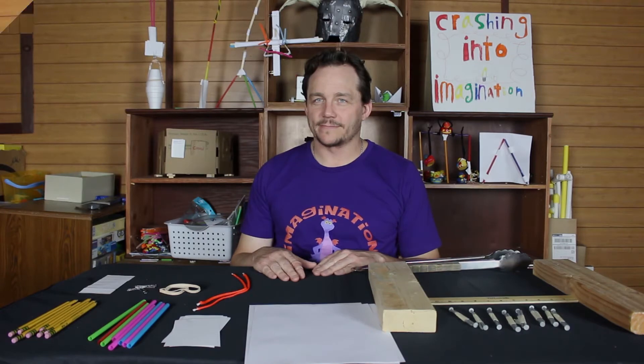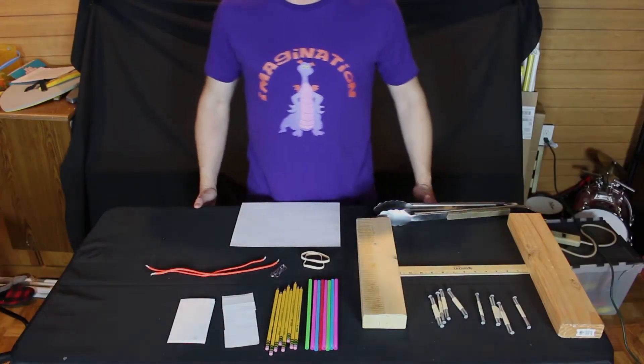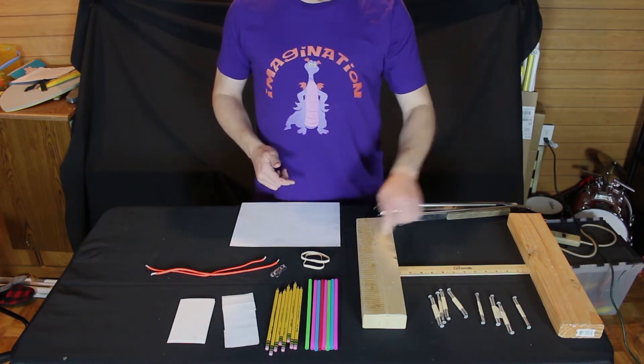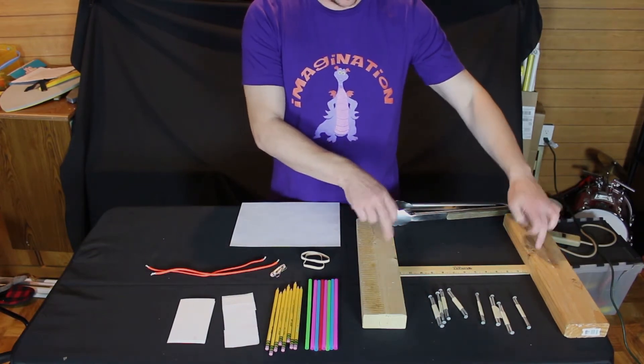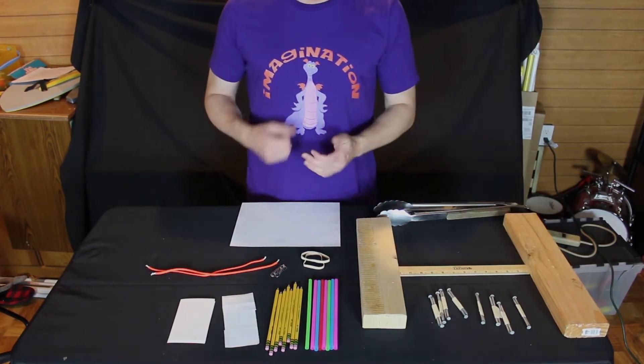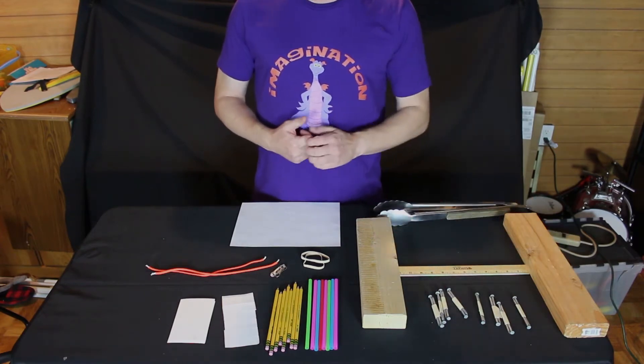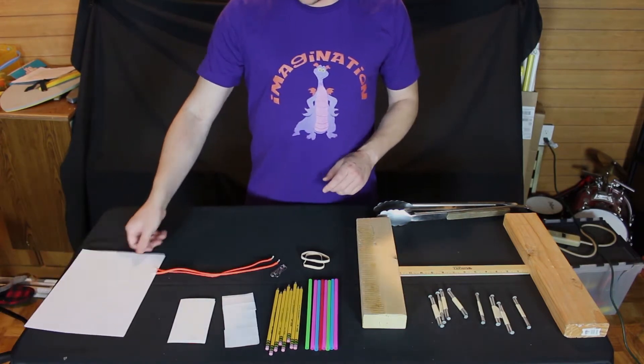Let's get started. Okay, we know we have to build a tower and a bridge. The bridge has to go at least this far apart, so we need to build a structure that can span that.